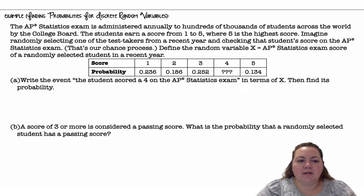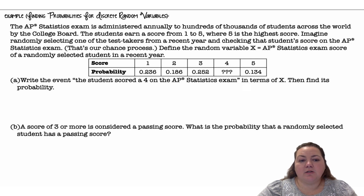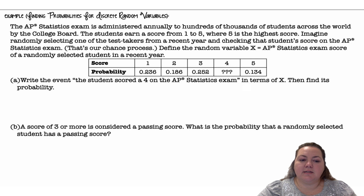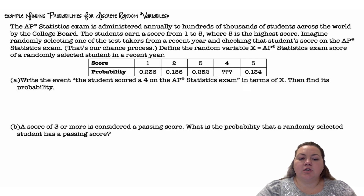Let's do an example of finding probabilities for discrete random variables. The AP Statistics exam is administered annually by hundreds of thousands of students across the world by the College Board. The students earn a score from 1 to 5, where 5 is the highest score. We define the random variable X as the AP Statistics exam score of a randomly selected student in a recent year, and we have a probability distribution with scores and their probabilities.